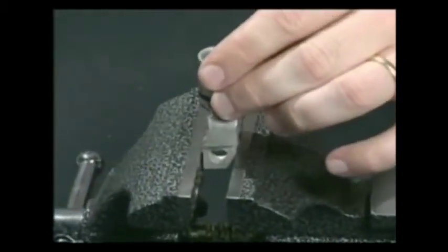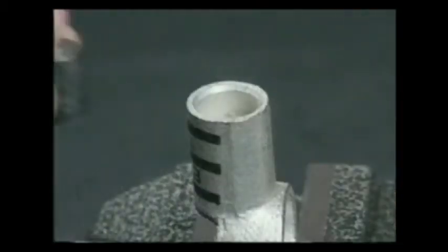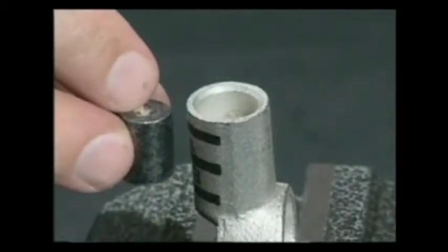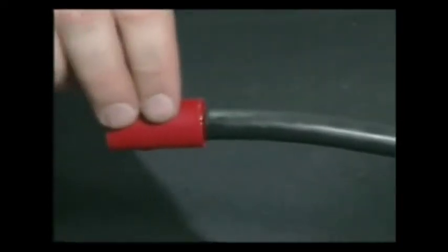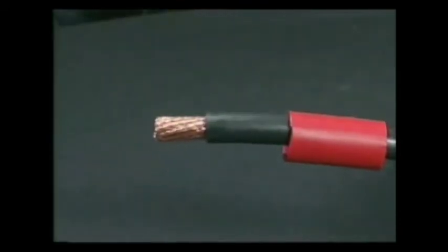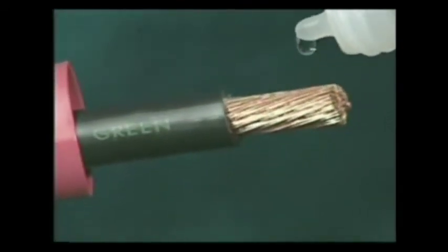Secure the terminal in a vise. Place the solder pellet in the barrel. Slide the heat shrink tubing over the cable. Apply several drops of flux to the exposed wires.